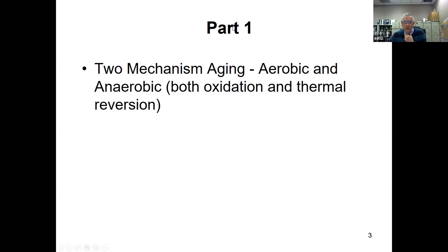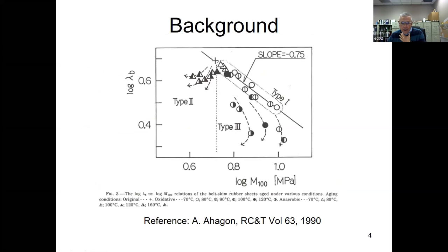Part one is two-mechanism aging — both oxidation and thermal reversion are present. The first slide is a background slide by Ahagan, a well-published scientist who worked for a Japanese tire company and published in Rubber Chemistry and Technology. He shows oxidative aging data for a natural rubber conventional cure compound and anaerobic aging at a variety of temperatures.